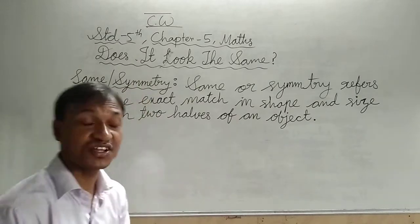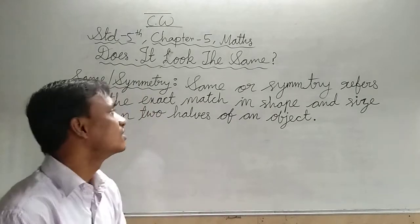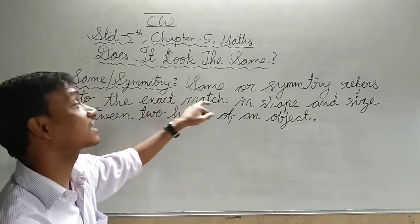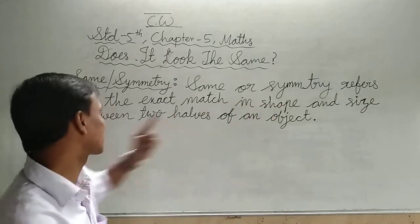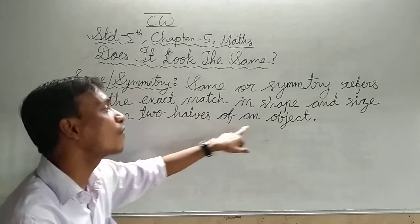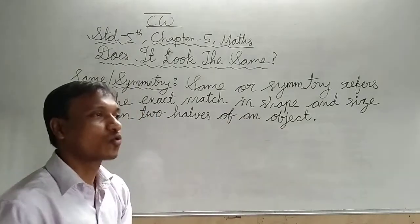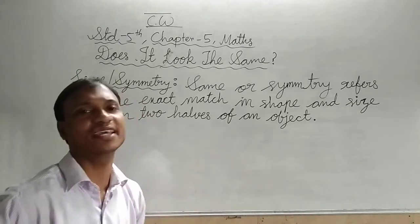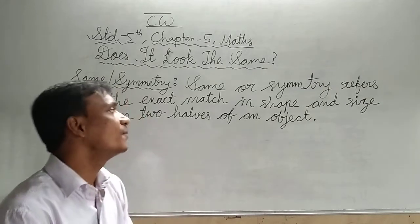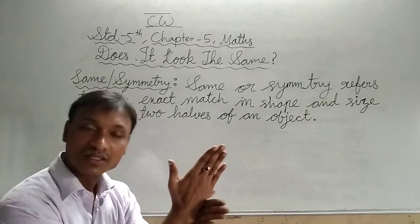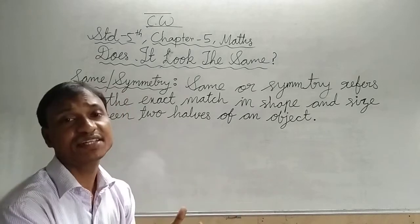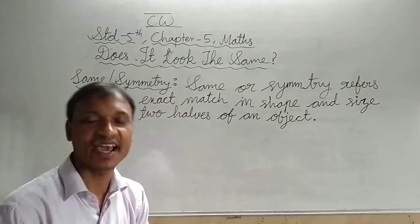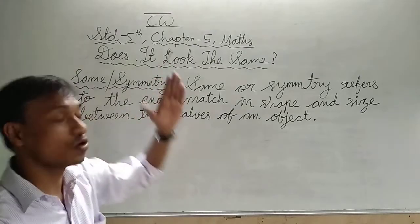So students, same or symmetry — what does it refer to? Same or symmetry refers to the exact match in shape and size between two halves of an object. If it is an object and both sides look the same in shape and size, we can say that it is same, it is symmetry.